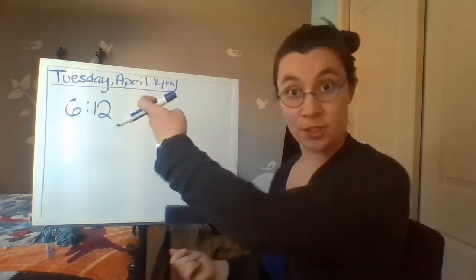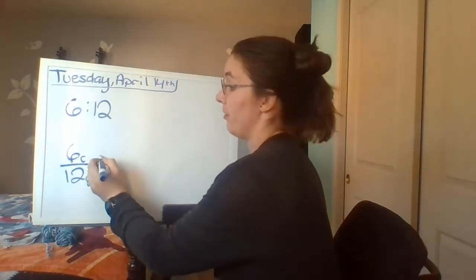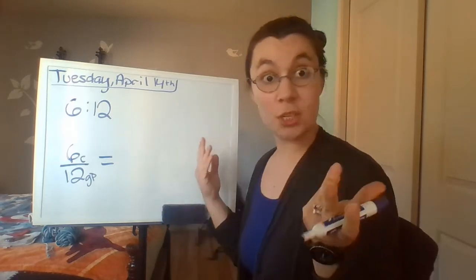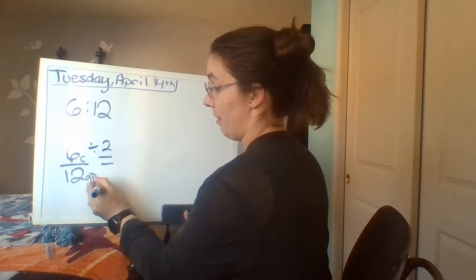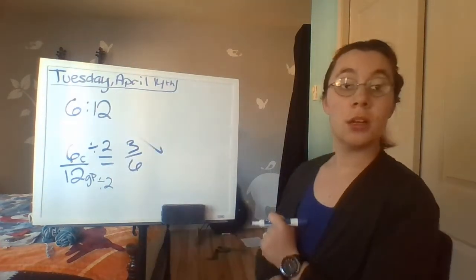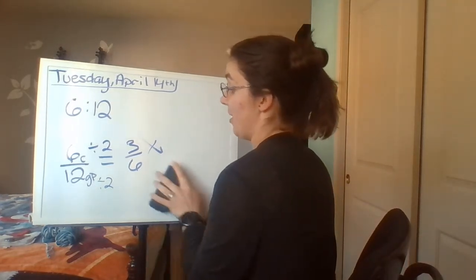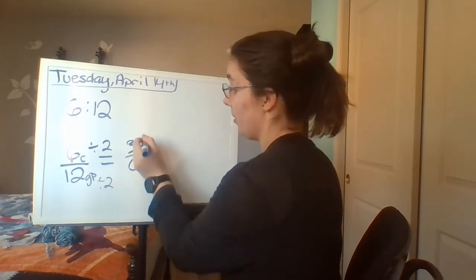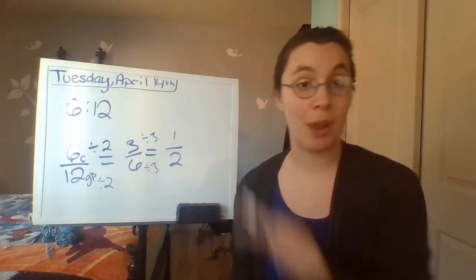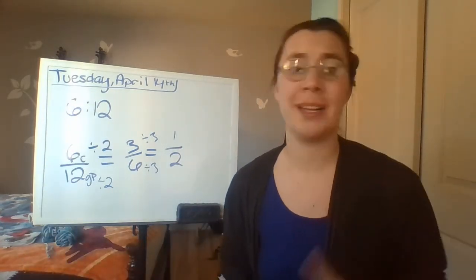We reduce it the same way we reduce a fraction — we could write it as six over twelve, cats to guinea pigs, and reduce by finding a common factor and dividing until we can't divide anymore. Six divided by two is three, twelve divided by two is six — that's three to six. We still have another common factor: three divided by three is one, six divided by three is two. Now our ratio is one to two. For every one stuffed cat, I have two stuffed guinea pigs.